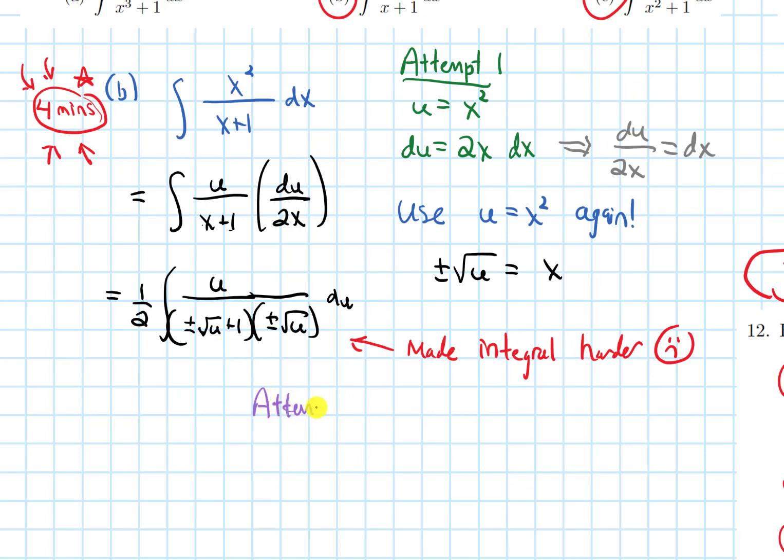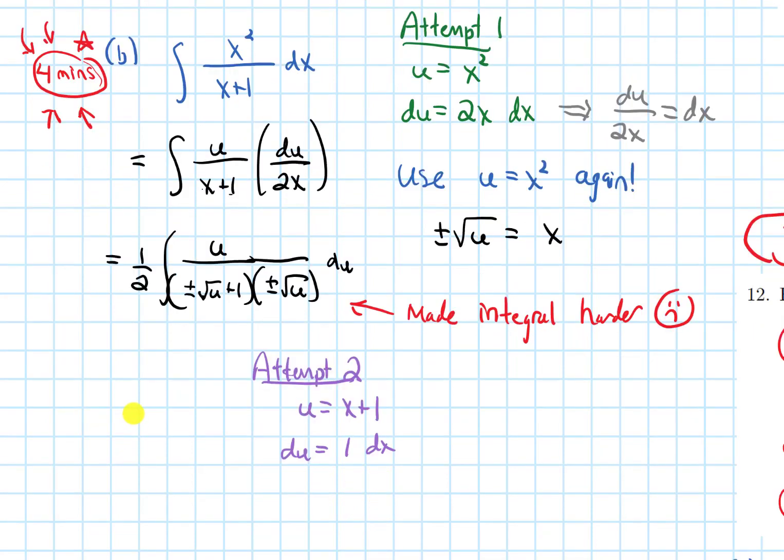So let's try this different way. Attempt two. Let's try a different u-sub. What if I let u be the whole denominator? x plus 1. Then du, the derivative of x plus 1 is just 1. But I have to write the dx next to this. So now I'm going to sub in.